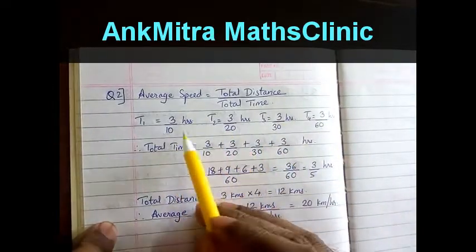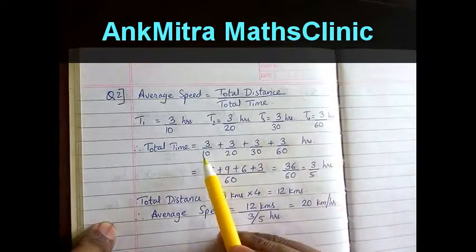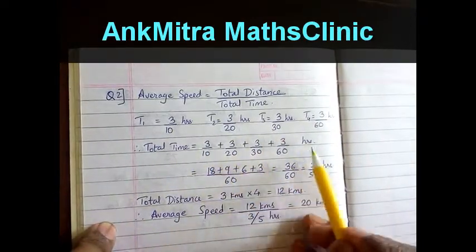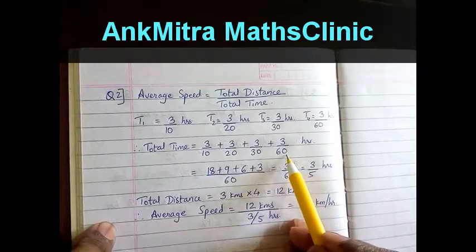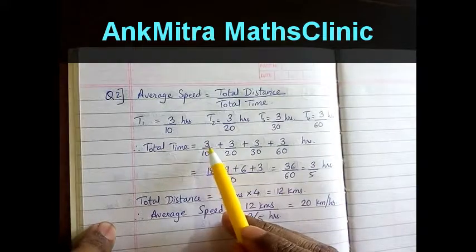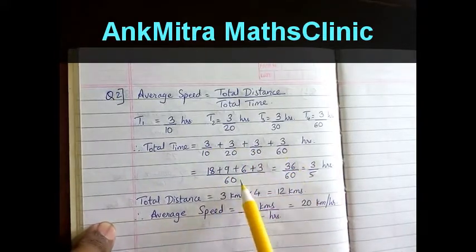This gives us this equation. The common denominator is 60, so to bring all the denominators to 60, we adjust the numerators accordingly and we get this fraction.